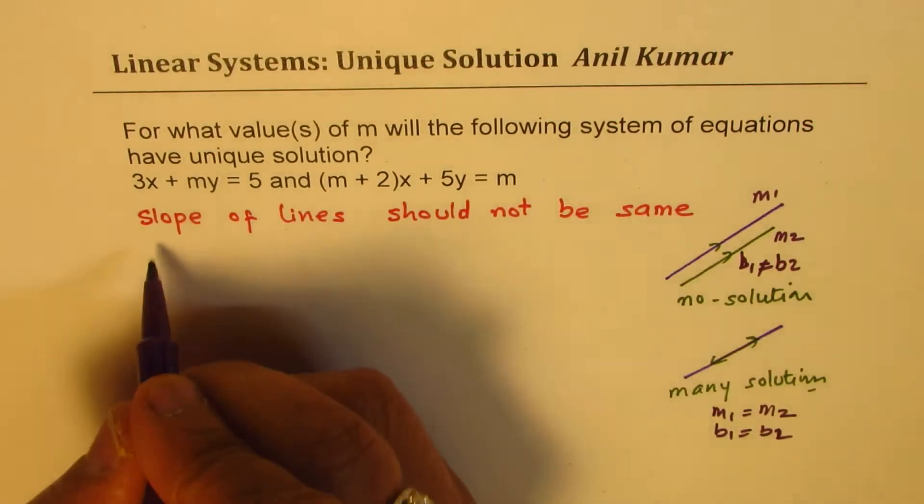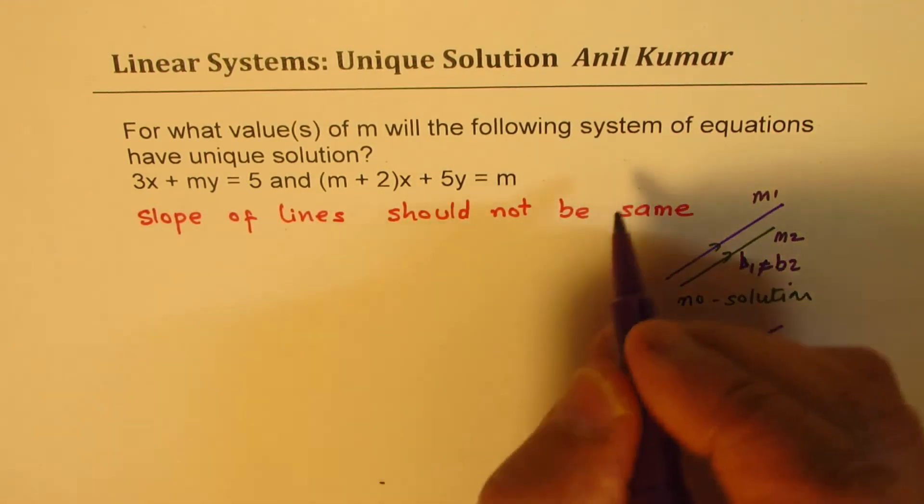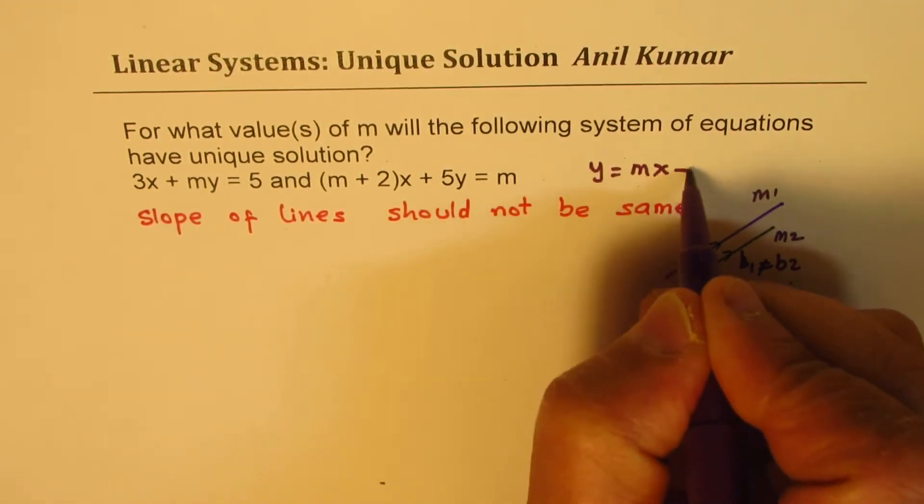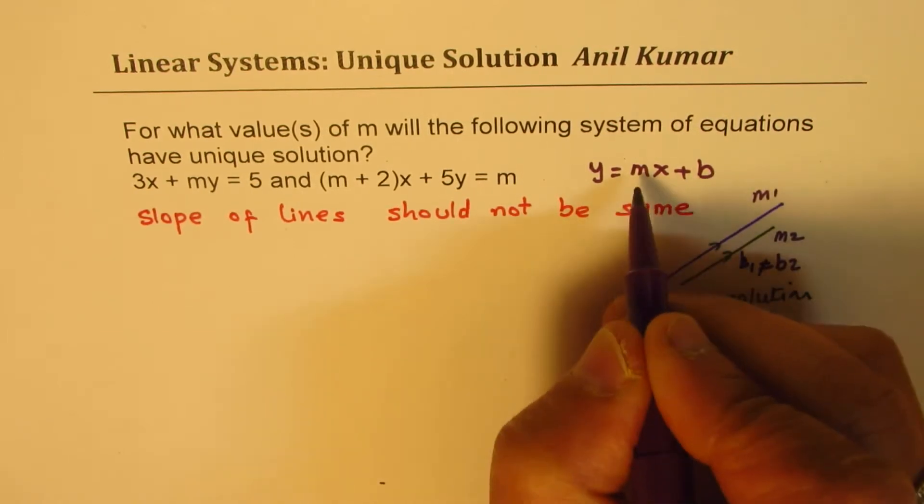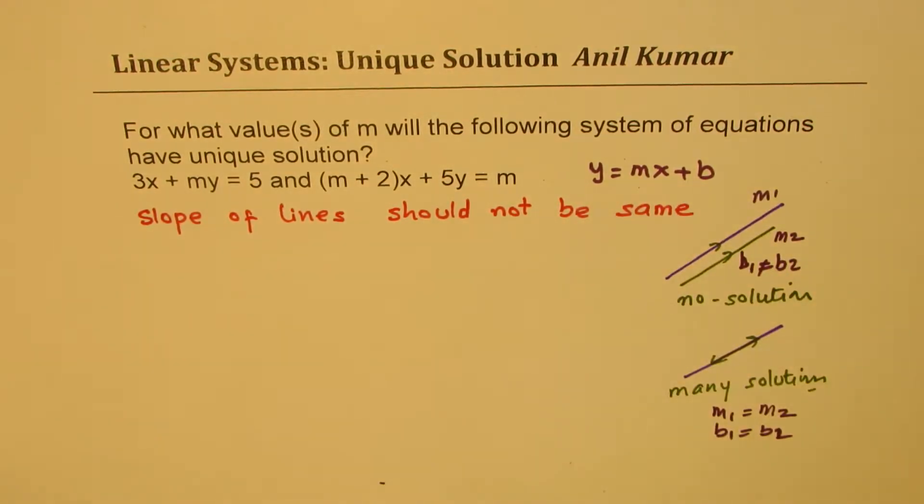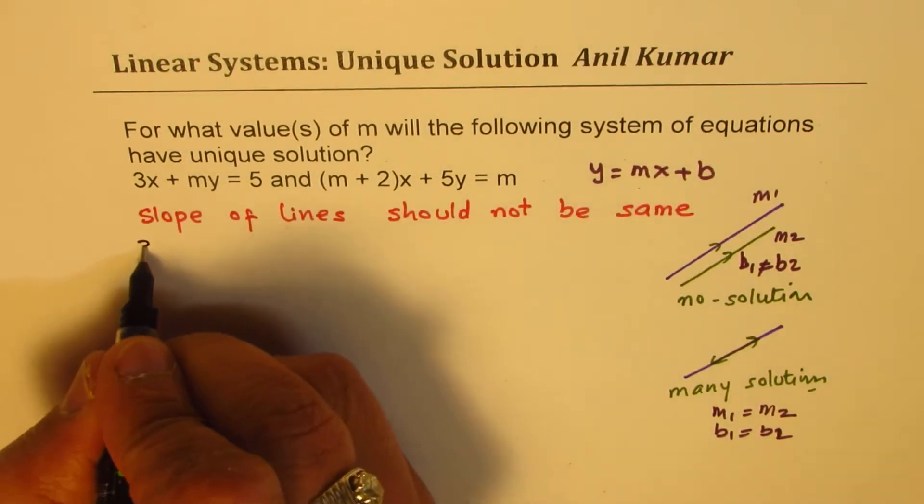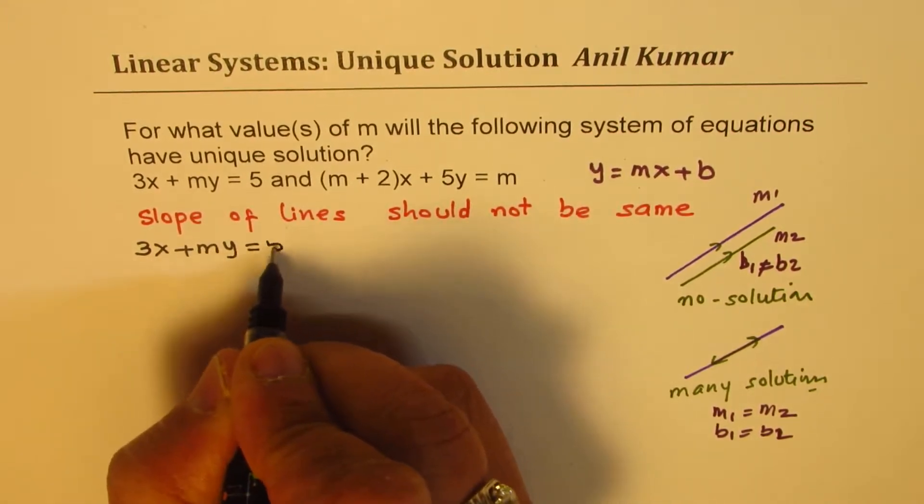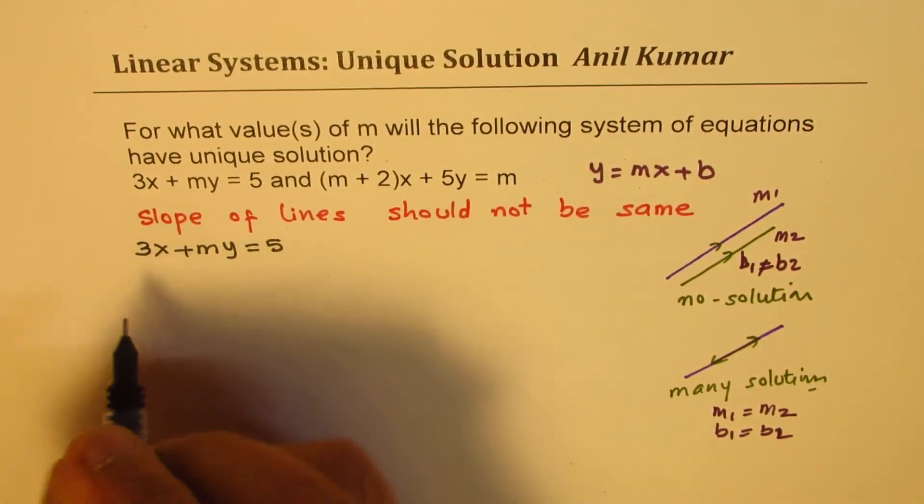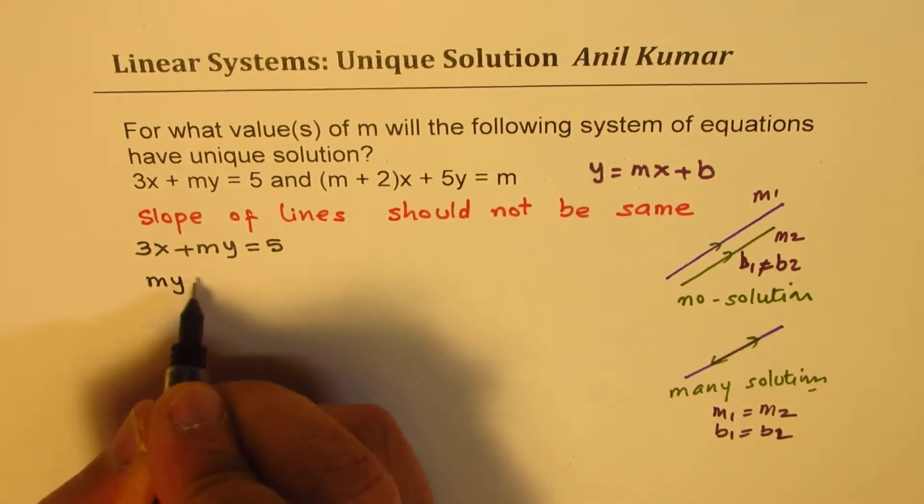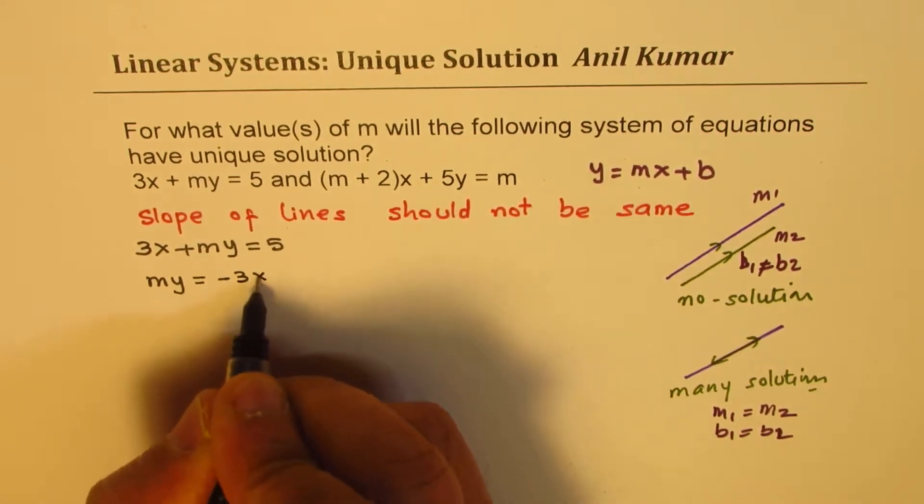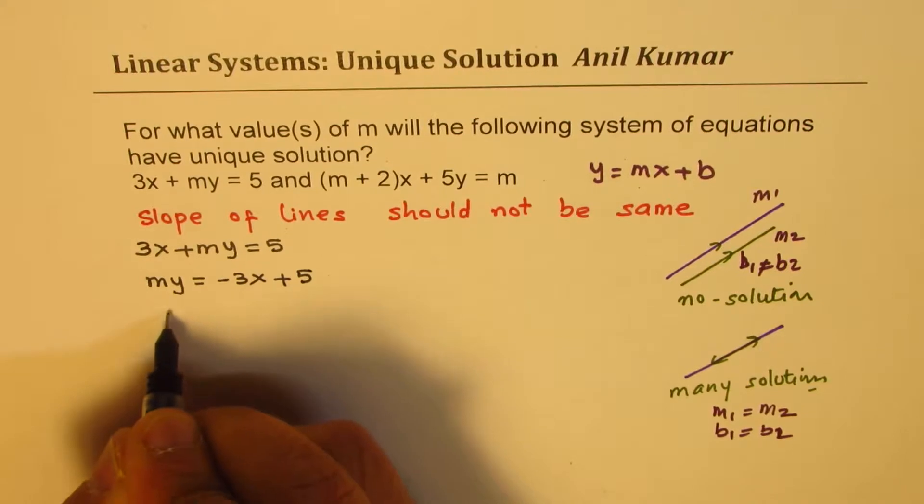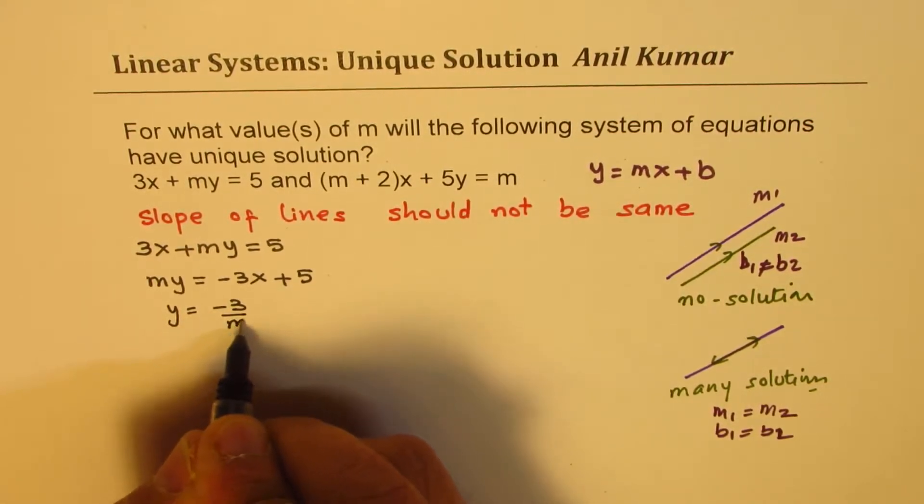So what we will do here is we'll write the equation of the line of the form y equals mx plus b, where b is the y-intercept and m is the slope, and then find the condition when their slopes are not same. We have two equations. First one is 3x plus my equals 5. Let us isolate y, so we get my equals minus 3x plus 5, y equals minus 3 over m times x plus 5.